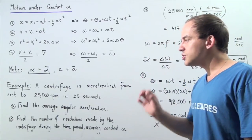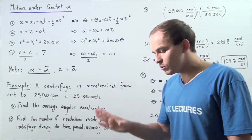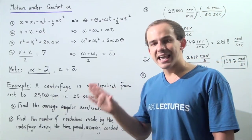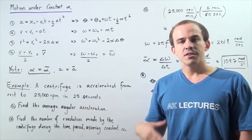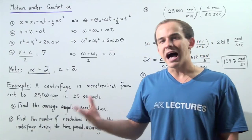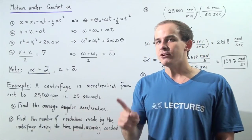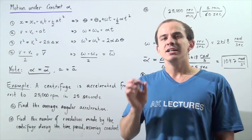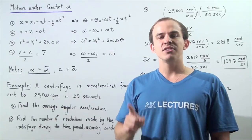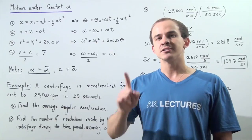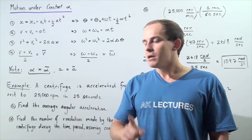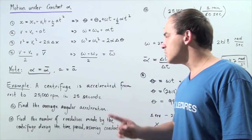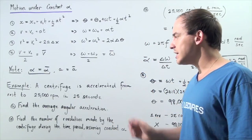We basically want to use the frequency to calculate the angular velocity and then use the angular velocity to calculate the angular acceleration. But before we use the frequency, we have to convert it from revolutions per minute to revolutions per second.